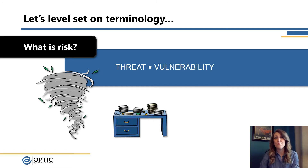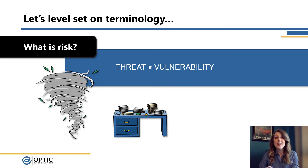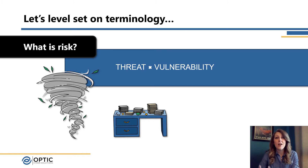The next important piece is a vulnerability — you have to have something for that threat to act on. In our example, we have a desk that's looking a little full, maybe a little messy, with some papers piled up, sticky notes, glasses, a cup of coffee. There could be a potential vulnerability here based on all of that information sitting out on your desk — potentially sensitive documents sitting out in the open in your office.